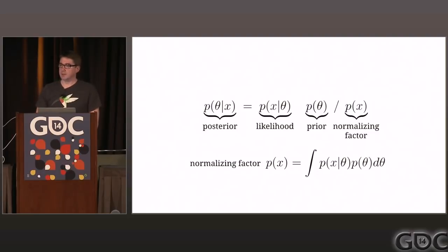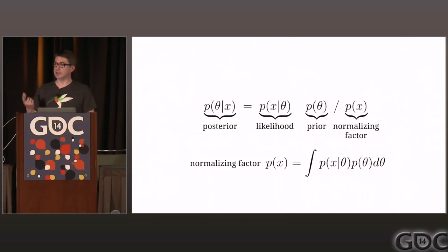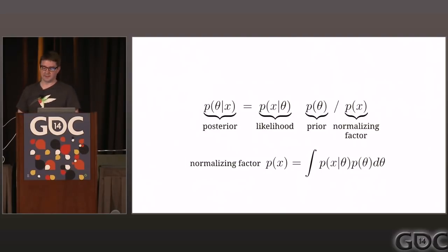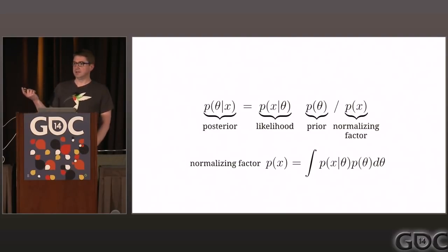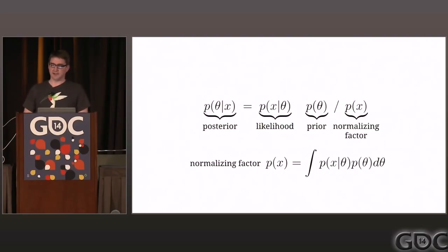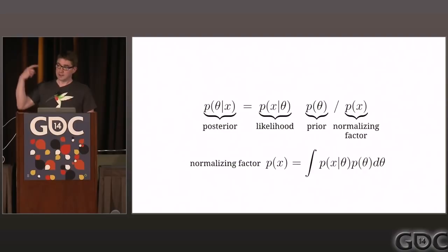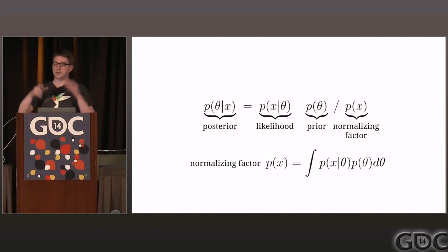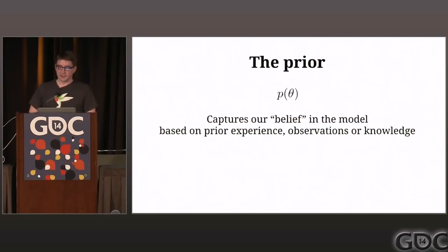Breaking this out into classic Bayesian terms: the probability of the model given the data is the posterior — what we're looking for. The probability of the data given the model is the likelihood — we choose a model that maps to the process we're testing. The probability of the model parameter is our prior — that's where our industry knowledge comes in. We can say P(theta) should be something because I understand my retention rate should be 30%, and plug that in. It's a really good way of bringing industry experience to bear.